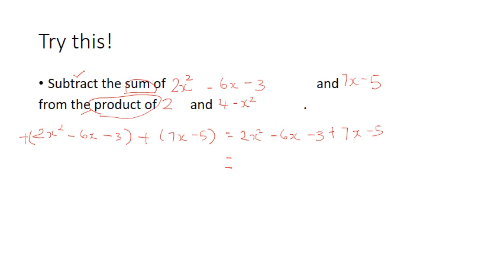Next step would be to put all the terms that are the same, which we call like terms, together. So, we have x squared term, x term, and we have constant terms. We put all the x terms together, we get 2x squared minus 6x plus 7x minus 3 minus 5. And from here, we get 2x squared plus x minus 8.